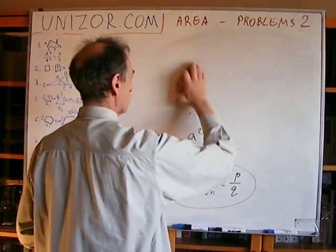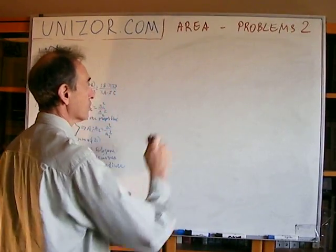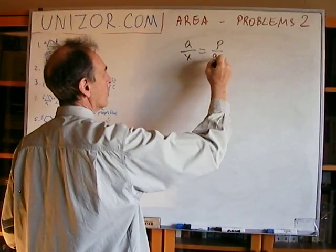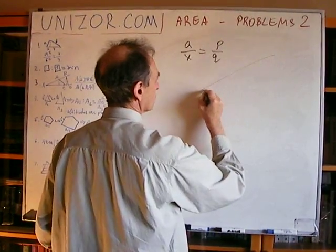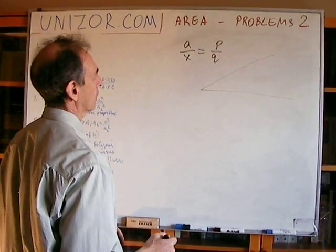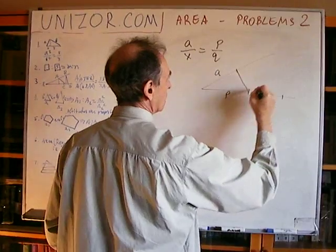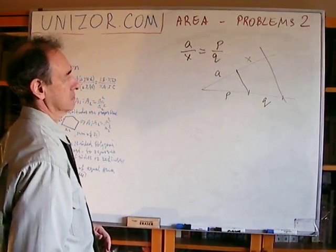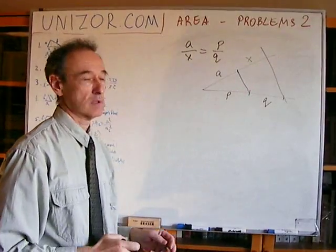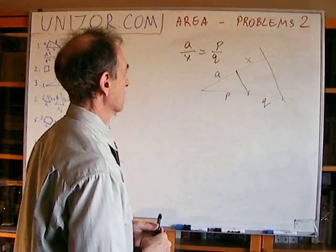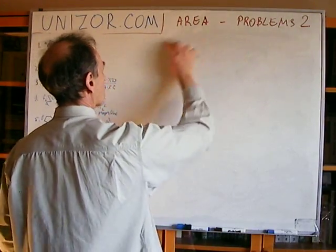So all we have to do is construct the fourth proportional, which is very easy — we did it many times before. If you have a over x equal to p over q, where a, p, and q are known segments, you place parallel lines with a, p, and q, and that piece will be x. It follows from similarity — it's trivial. We did it when discussing similar triangles.